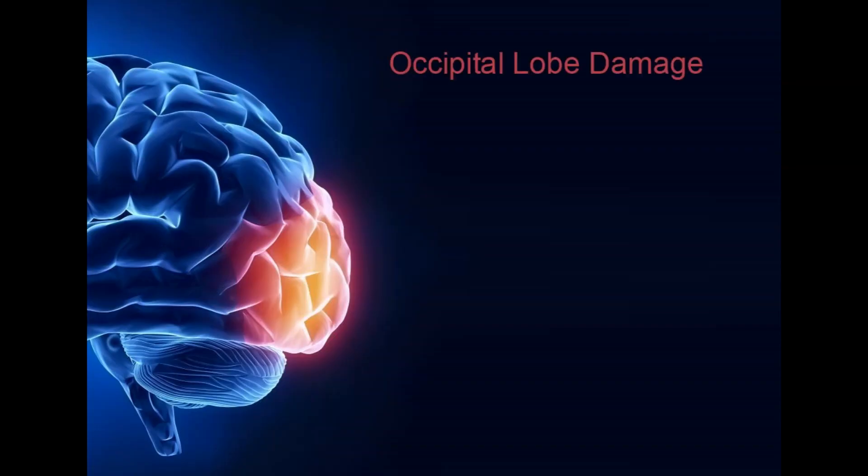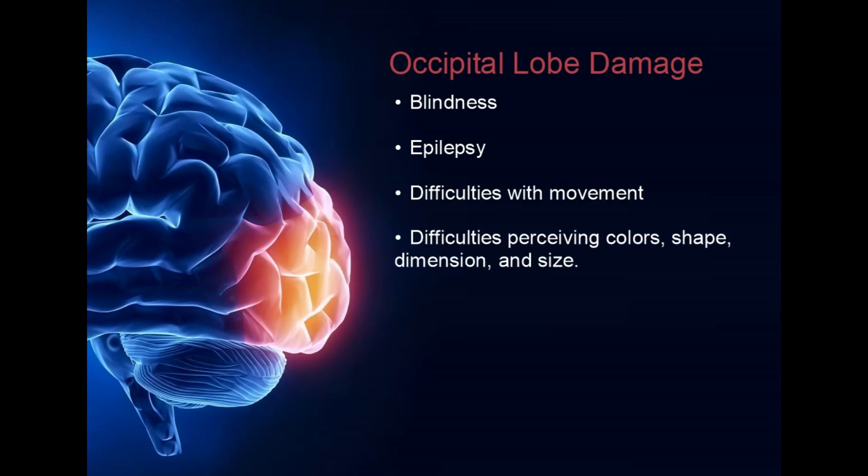Damage to the occipital lobe can result in blindness, but can also cause other effects such as epilepsy, difficulties with movement, and difficulties perceiving colors.